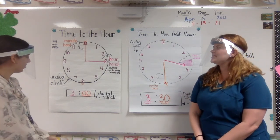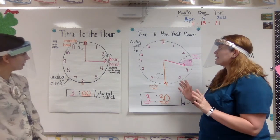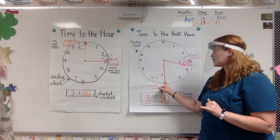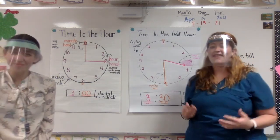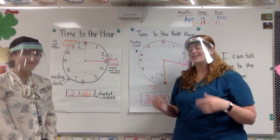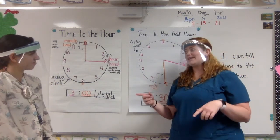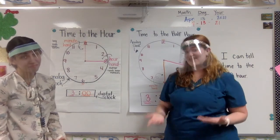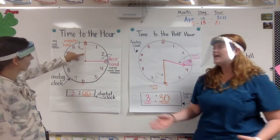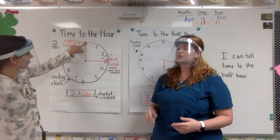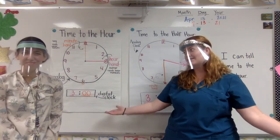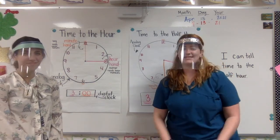Where is it? When I'm telling time to the half hour, my minute hand is pointing straight down to the six. And that tells me it's 30 minutes, because 30 minutes is half an hour. But when I was telling time to the hour, it was pointing straight up to the 12 — so that was an o'clock, or zero minutes.